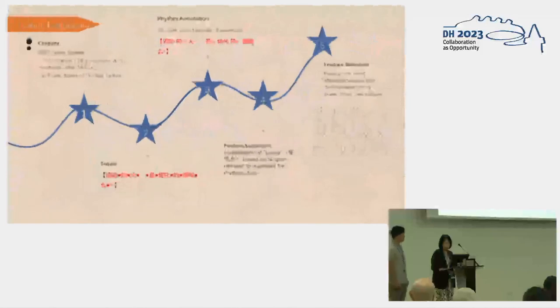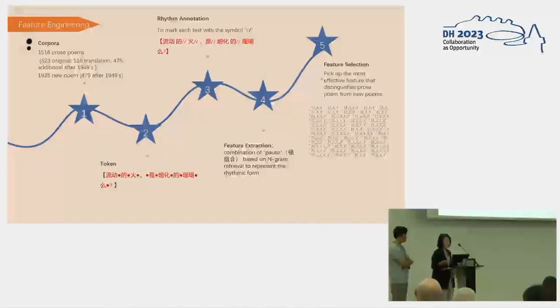So here's our procedure. First, we collected via OCR 1,515 works with the label of Sanwen Shi from the Archive of Republic Periodicals. At the same time, we initially built a cross-referenced corpus of 1,925 neo-poems. All tokenized, the corpus is marked with the symbol slash for rhythmic pause. Here, an important thing is why we do it in this way. Pause, ting dun, equals to the suspension, ting yan.